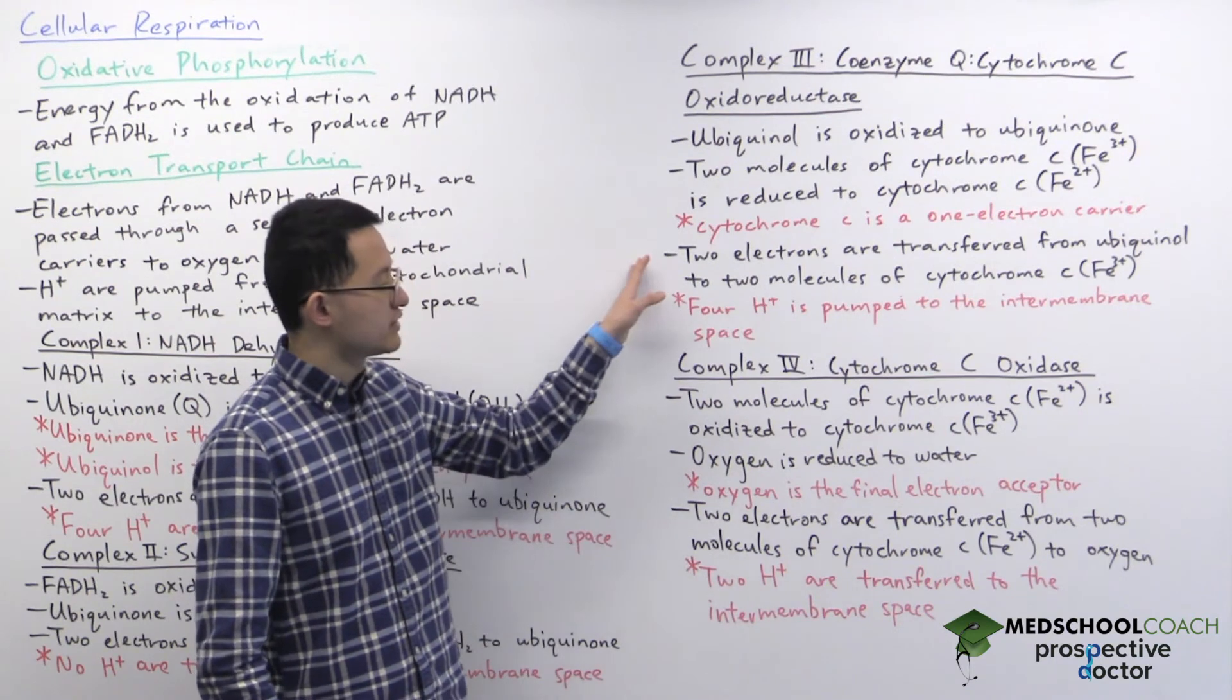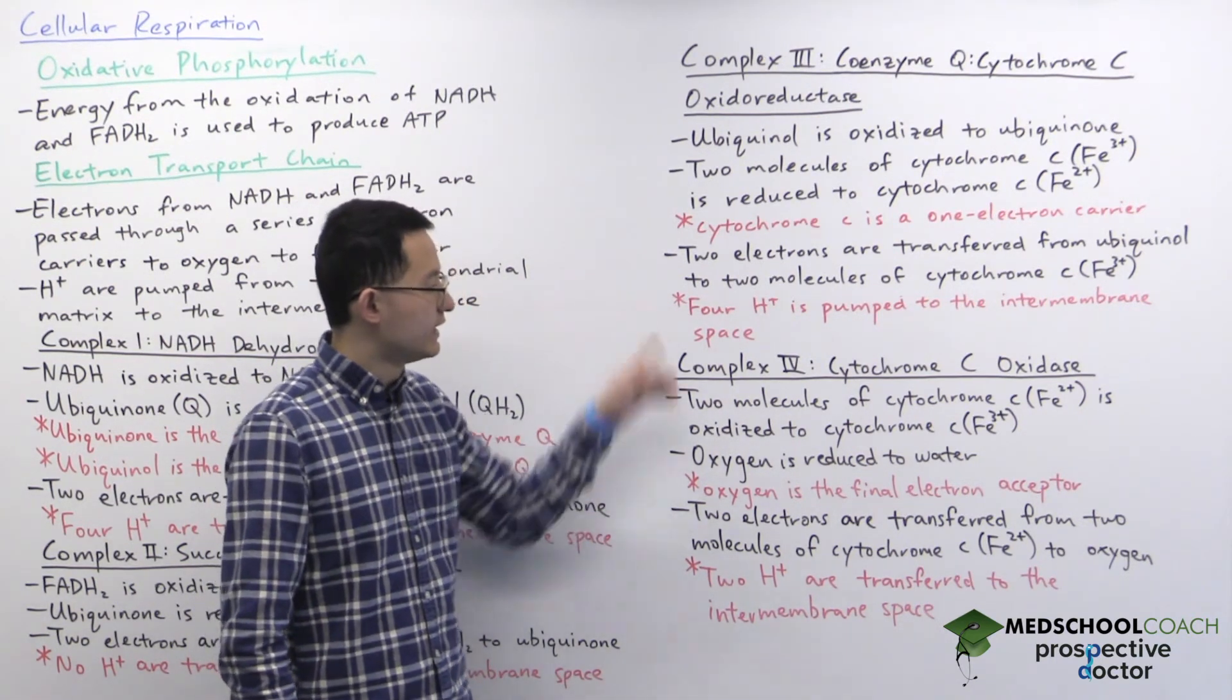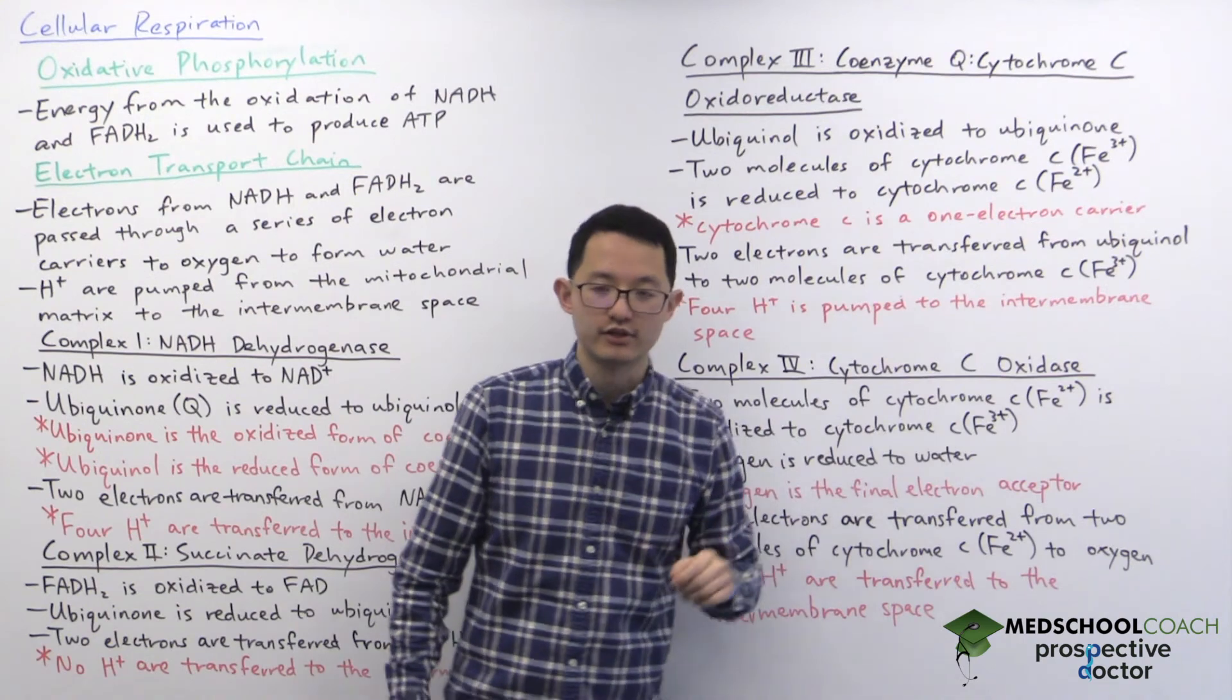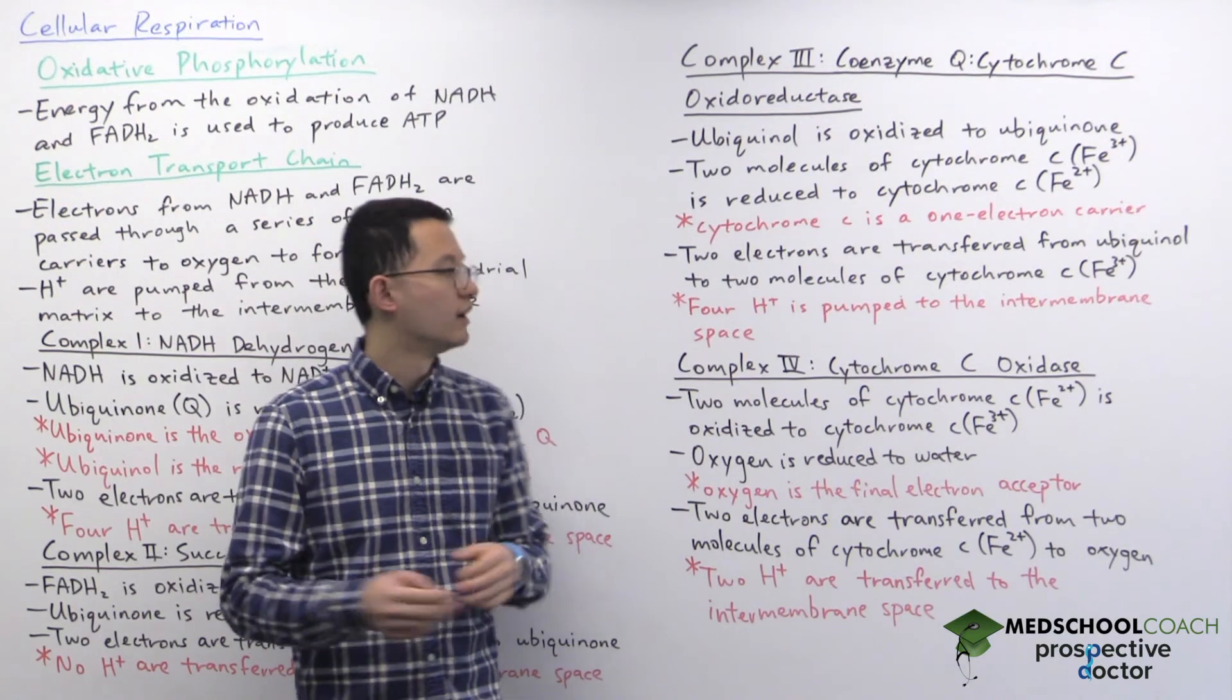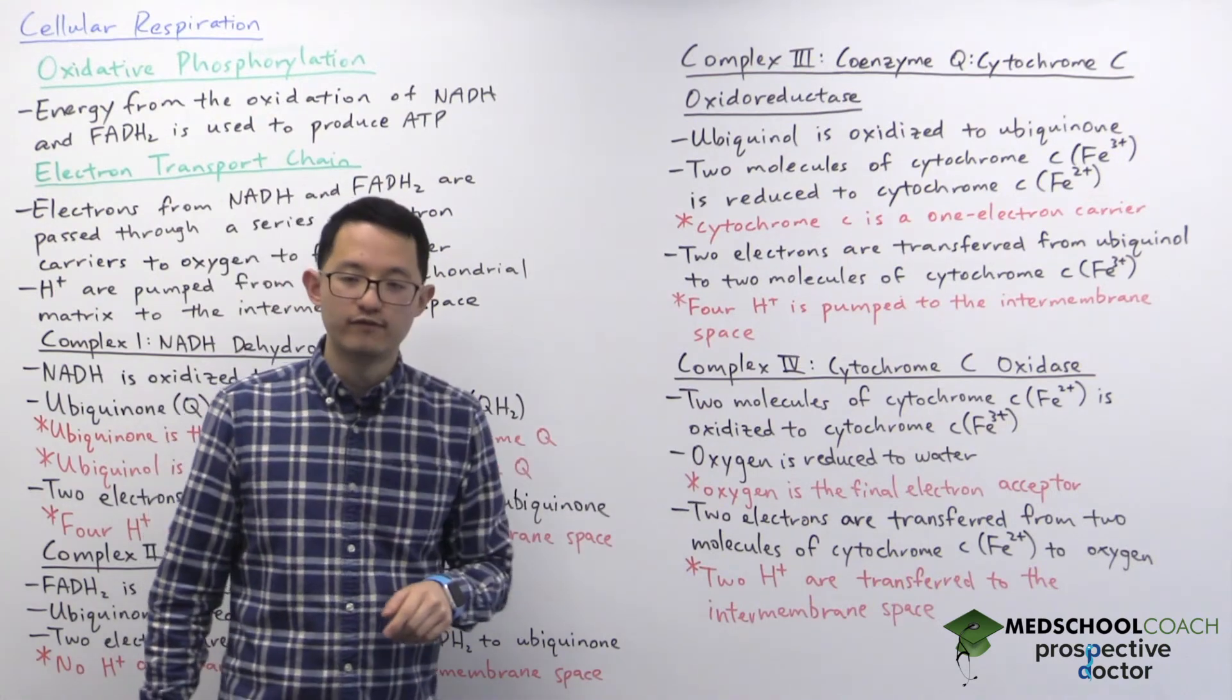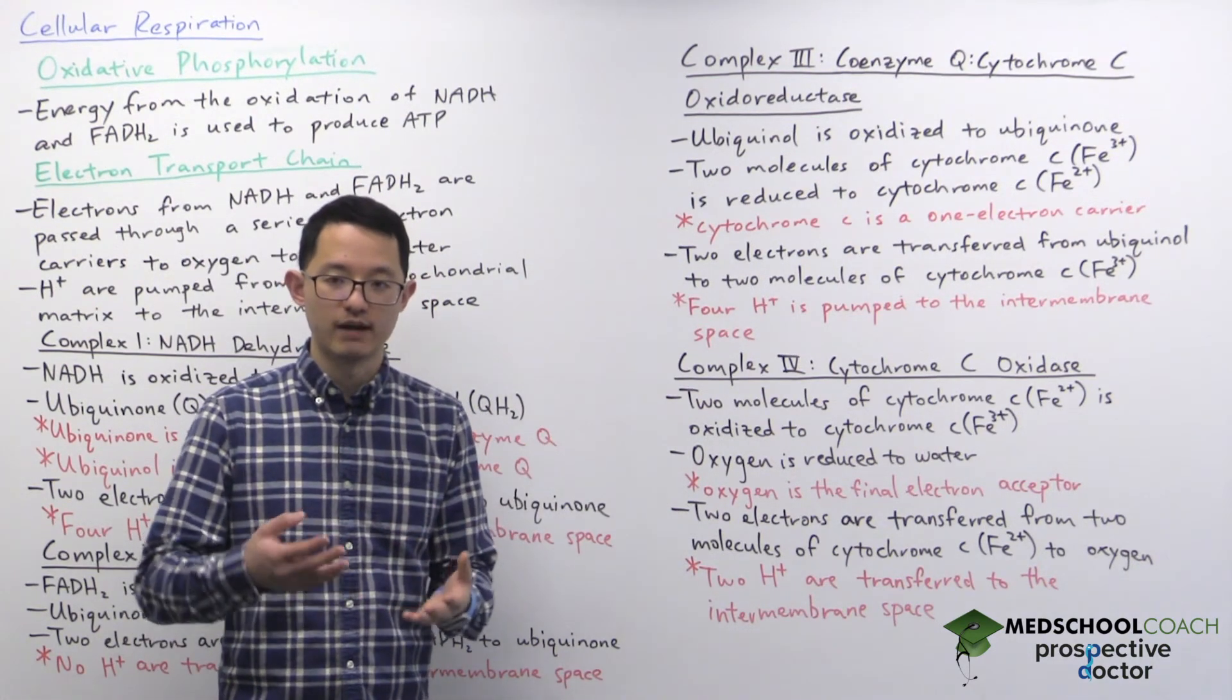So two electrons are going to be transferred from ubiquinol, and one of each of those two electrons are accepted by a cytochrome C molecule. So basically just note that we need two cytochrome C molecules per ubiquinol for this step. And as part of this process, we will transfer four protons into the intermembrane space to help generate that proton gradient.